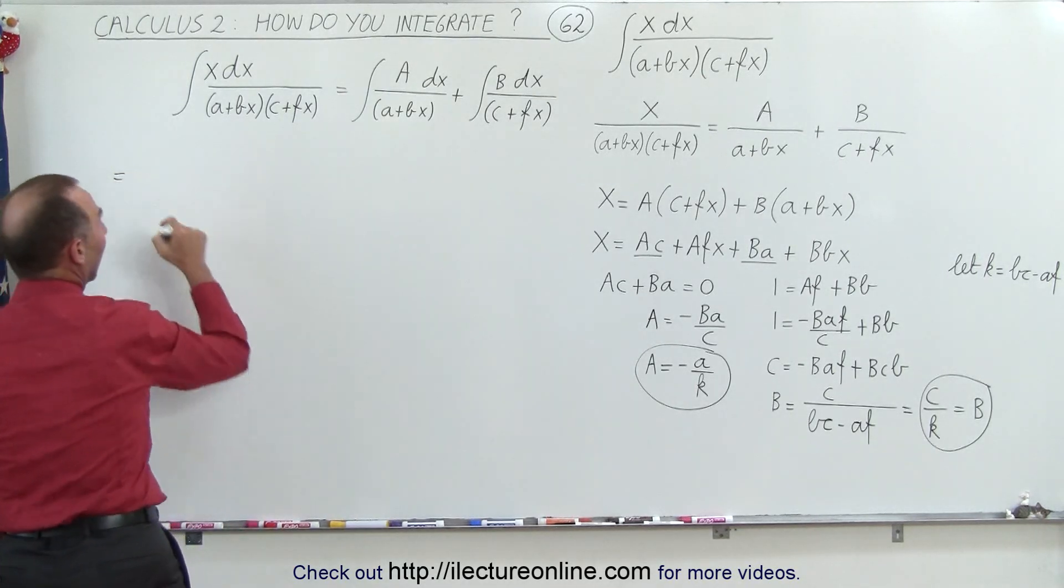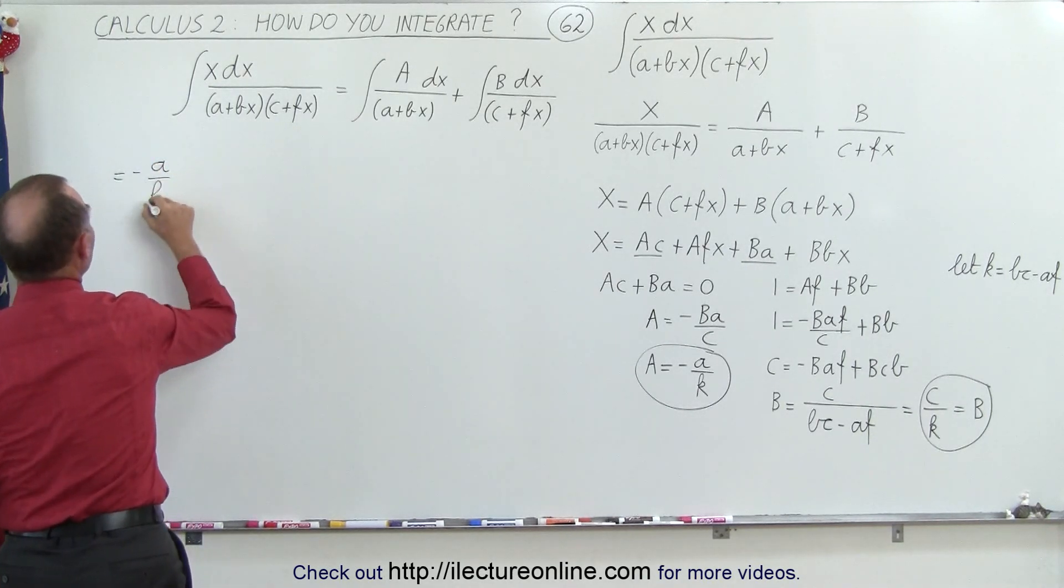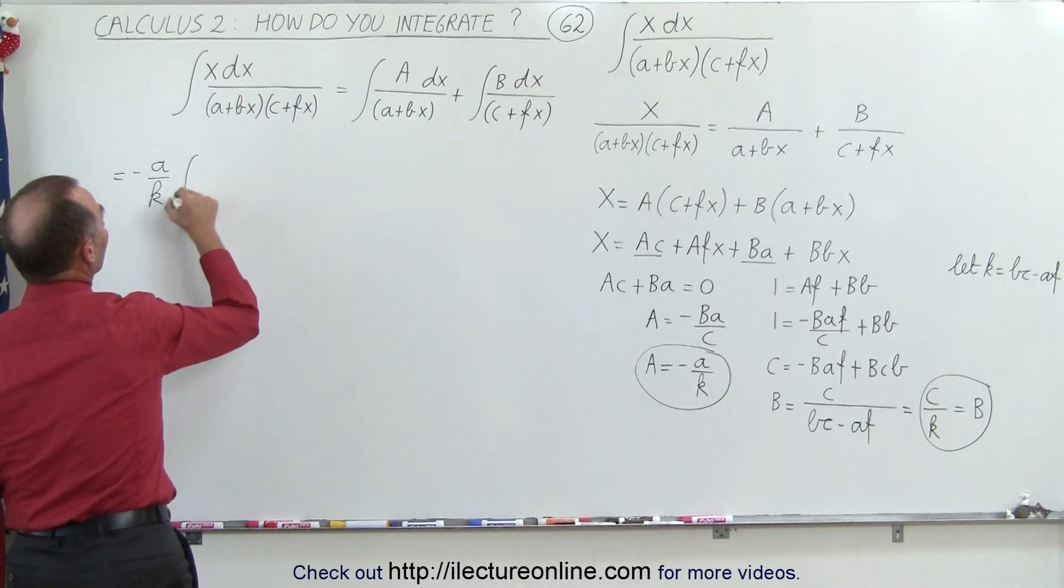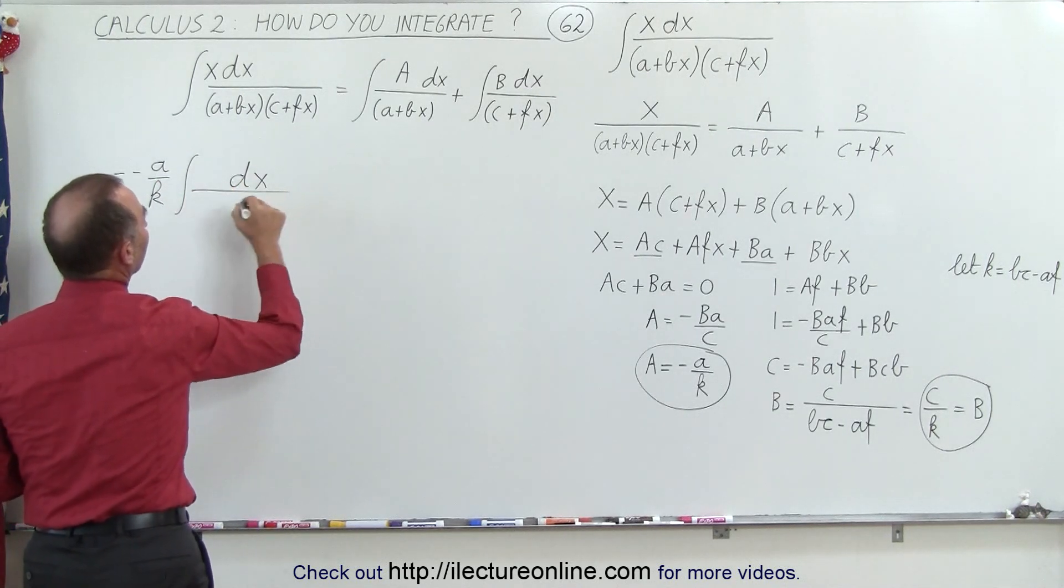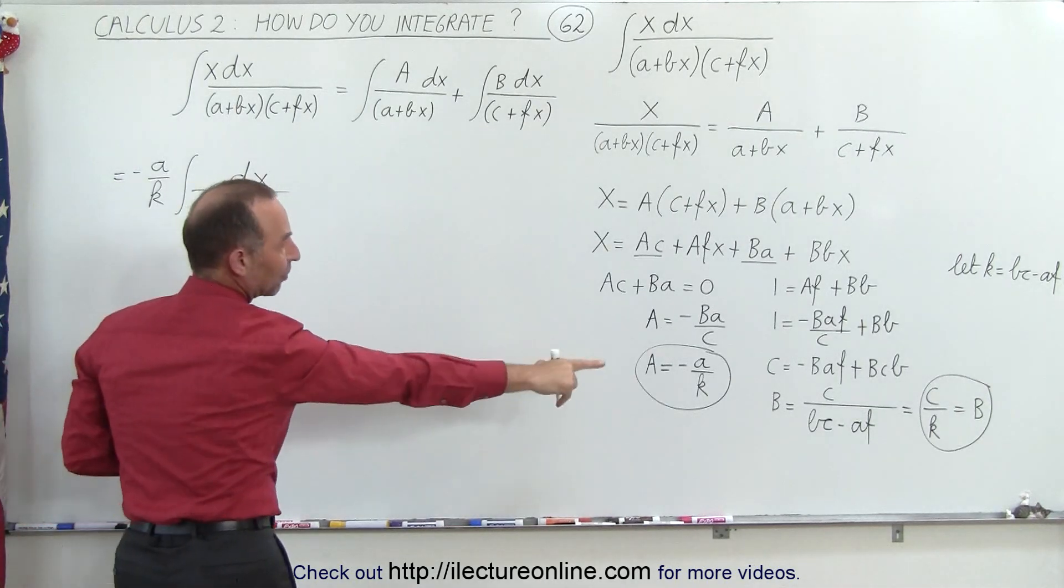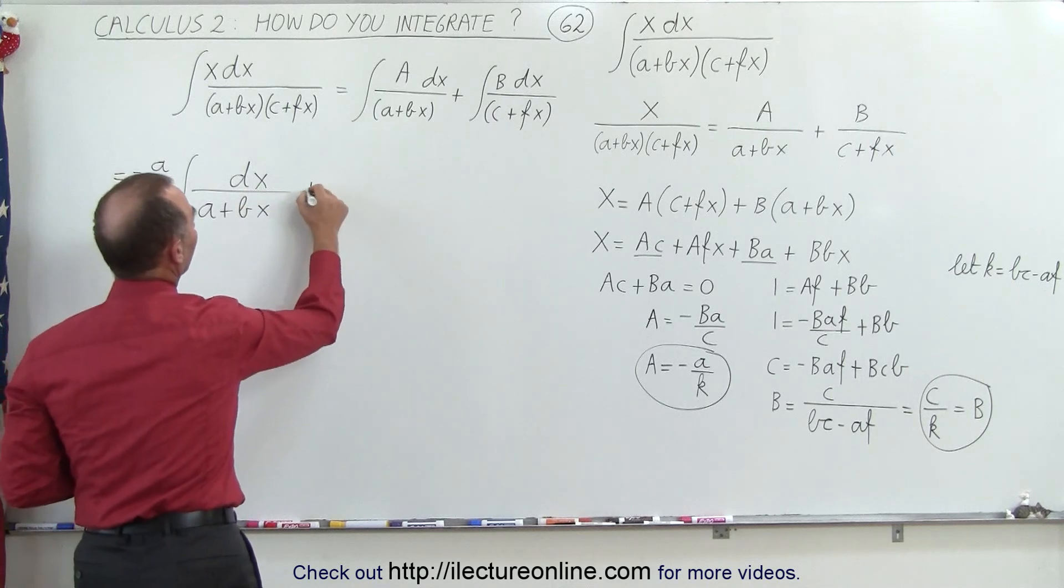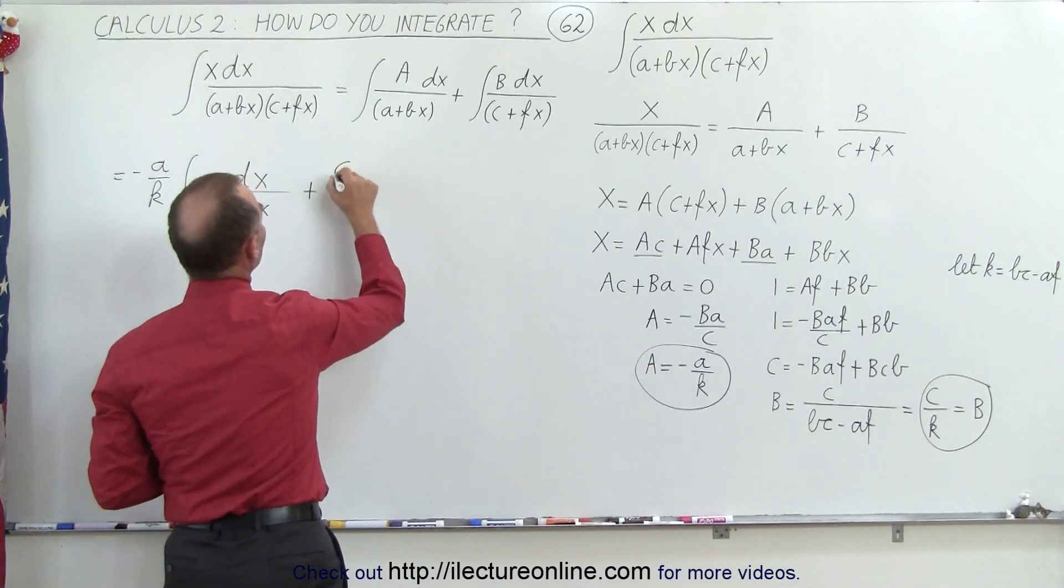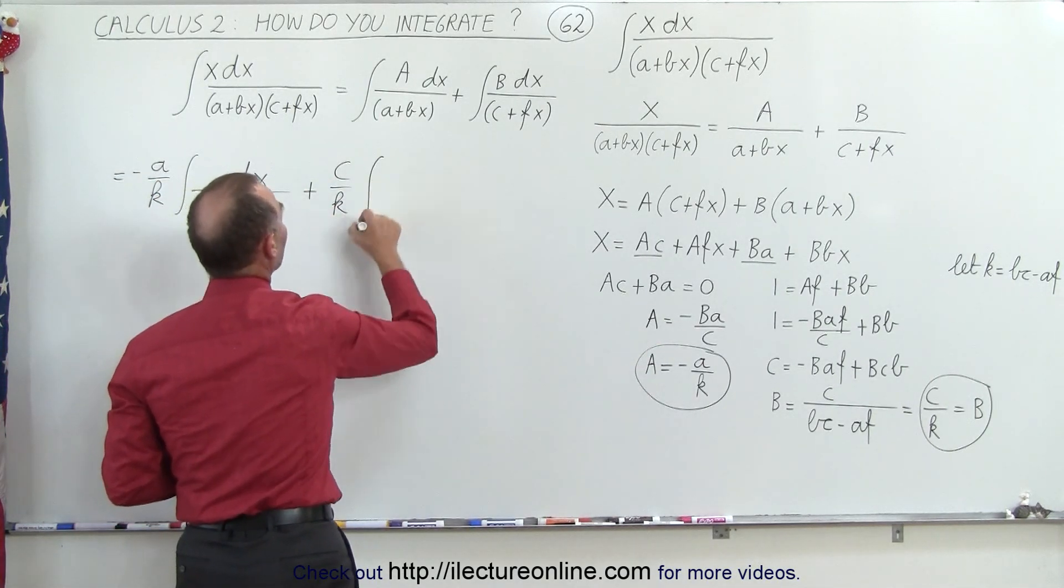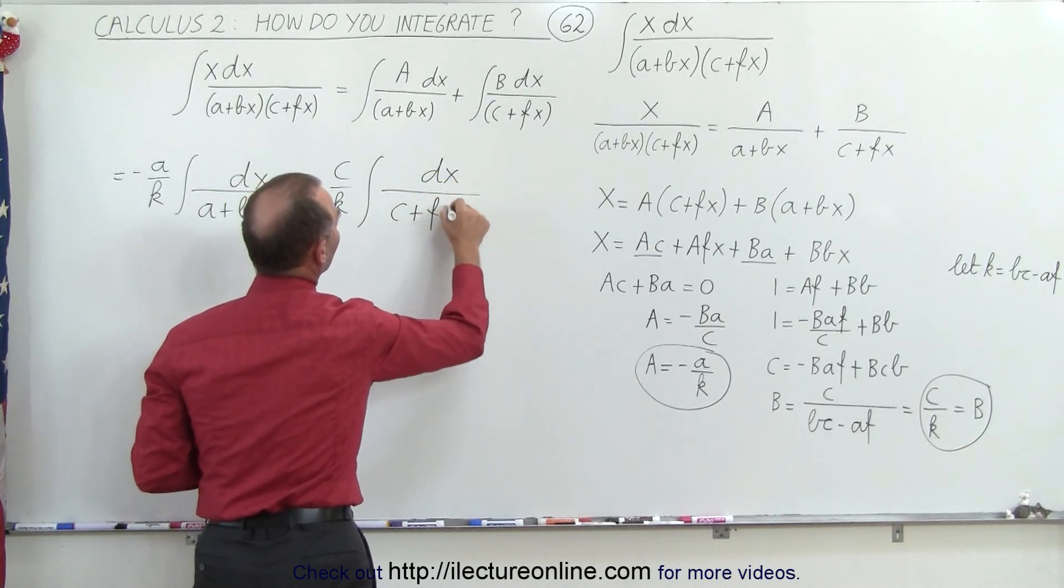So this can now be written as A is going to be minus a over k times the integral of dx divided by a plus bx. And then we have the B there. We need the negative, that's there. We have a plus. The B is going to be c over k times the integral of dx divided by c plus fx.